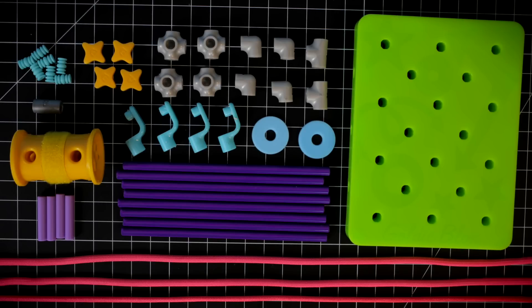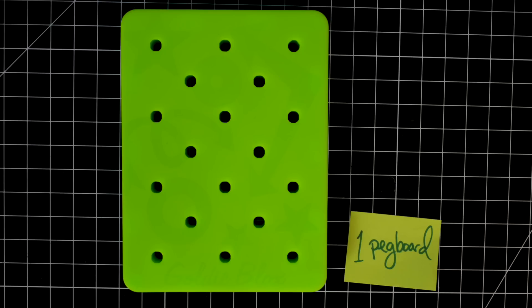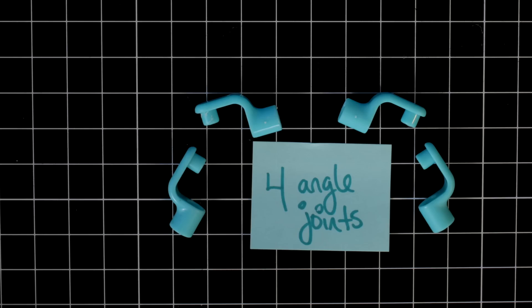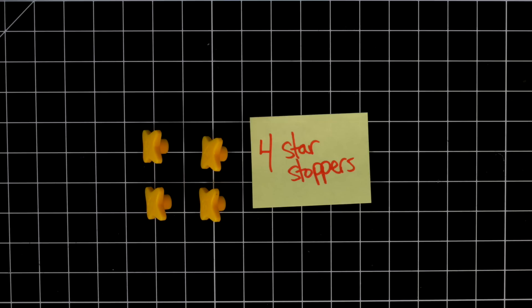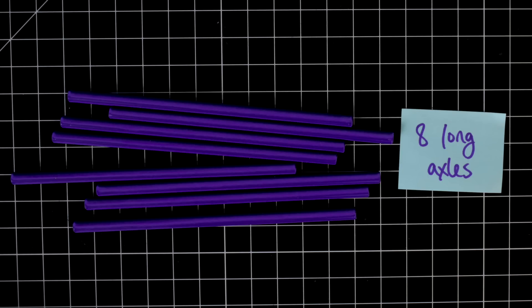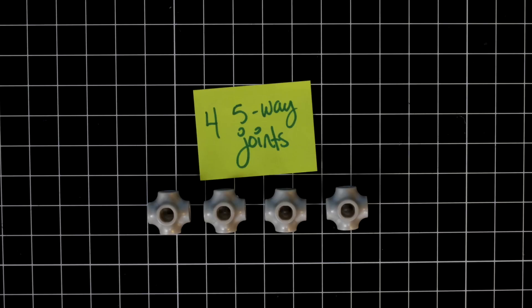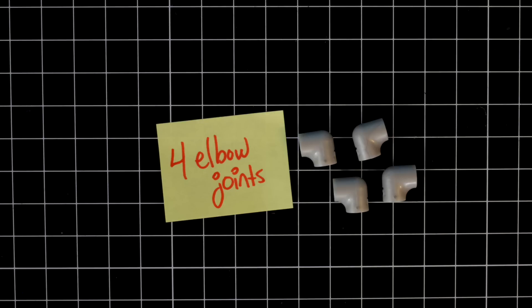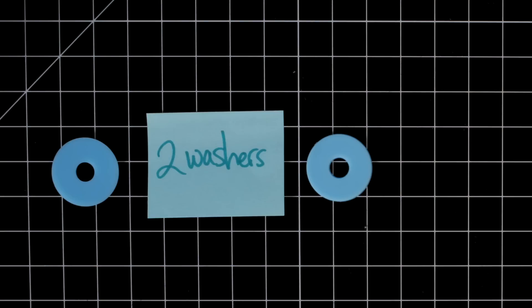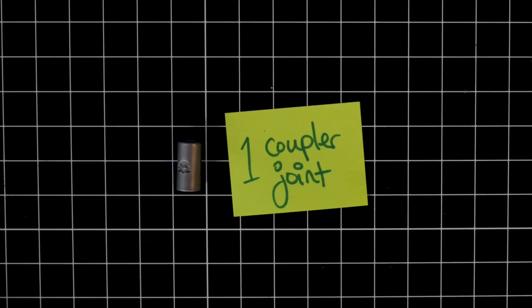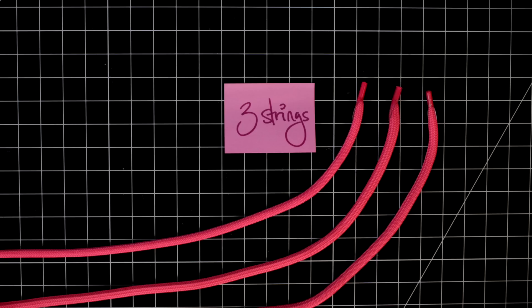Make sure you have everything. One pegboard, one wheel, four angle joints, four star stoppers, eight long axles, four mini axles, four five-way joints, four elbow joints, two T joints, two washers, seven pegs, one coupler joint, and three strings.